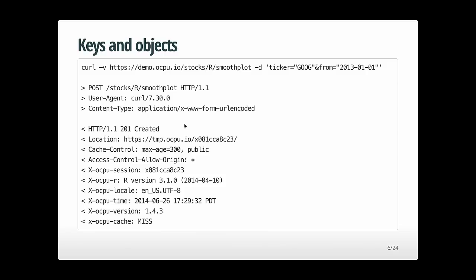If the function call is successful, we get back an HTTP 201, which gives us the location of the output on this server. For every remote procedure call, you get a unique key containing all the contents of that call. We also use cache control — I set it to five minutes. So if all of you call this R function at the same time, the server only executes it once. Subsequent requests within those five minutes simply serve the cached result. There's also an access-control-allow-origin header for cross-origin support.